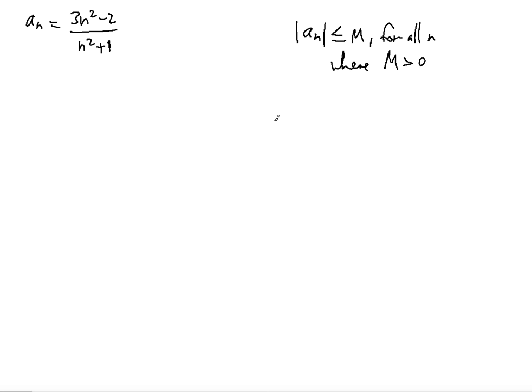So let's put this in the absolute value symbol and see what we're going to get. We're going to get 3n squared minus 2 over n squared plus 1. And since 3n squared is always going to be positive and n squared plus 1 is positive, we can just write it simply without the absolute value like this.